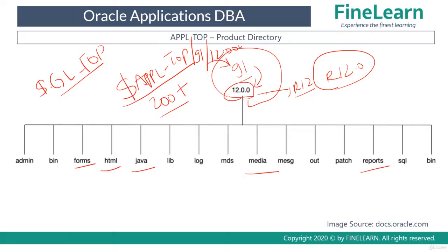We understood the concept of the product directory. For example, we have something called PER, which is nothing but HR_TOP. Under it, all HR-related forms, pages, Java files, reports, media files, and images are stored. Similarly, payroll-related ones will be there in PAY_TOP. So all business module-specific files and directories are located in their respective product tops. Let us now go to the file system and have a quick look at this APPL_TOP structure.